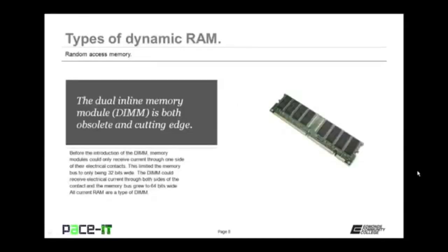Now let's talk about types of dynamic RAM, beginning with the dual inline memory module, the DIMM. The DIMM is both obsolete and cutting edge. Before the introduction of the DIMM, memory modules could only receive current through one side of their electrical contacts, limiting the memory bus to only 32 bits wide. The DIMM could receive electrical current through both sides, and the memory bus grew to 64 bits wide. All current RAM are types of DIMM.